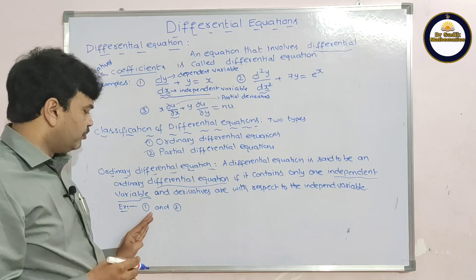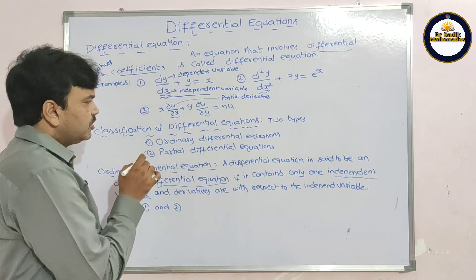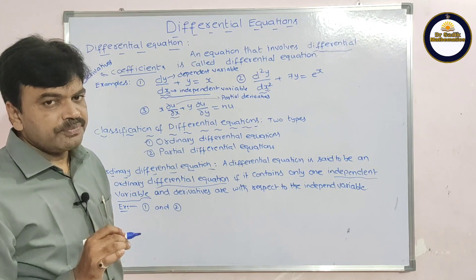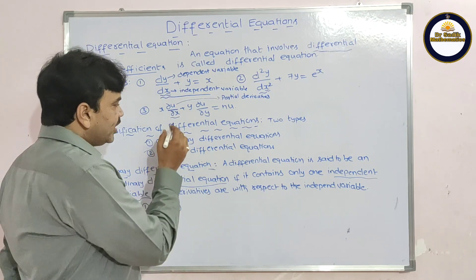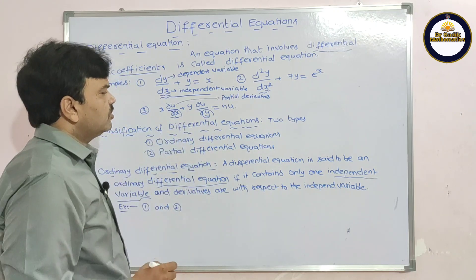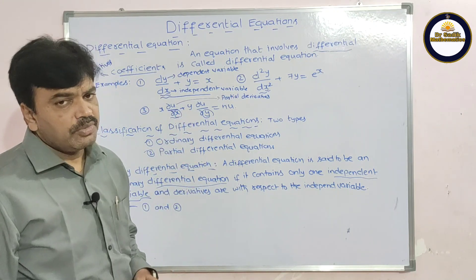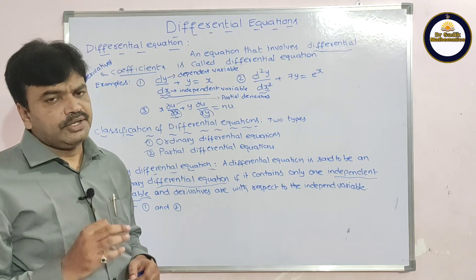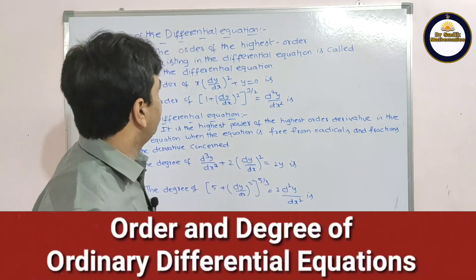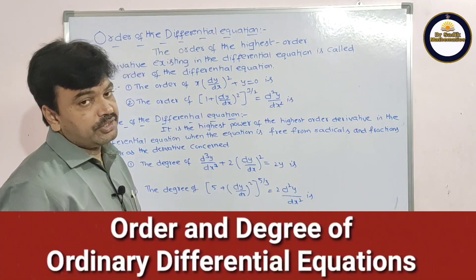Examples 1 and 2 are ordinary differential equations. If you observe the third example, there are two independent variables: x and y. Therefore, that equation is called a partial differential equation.